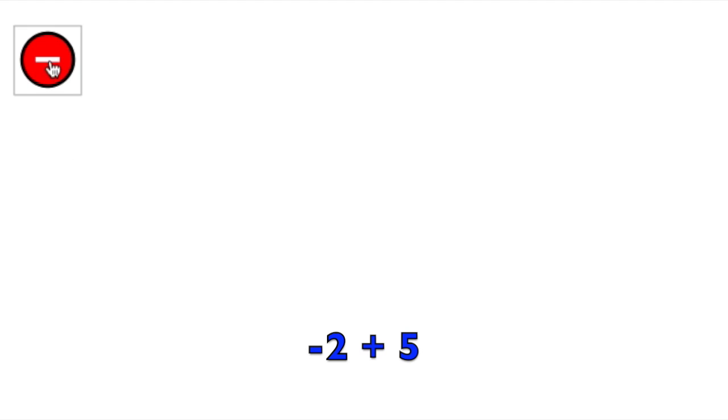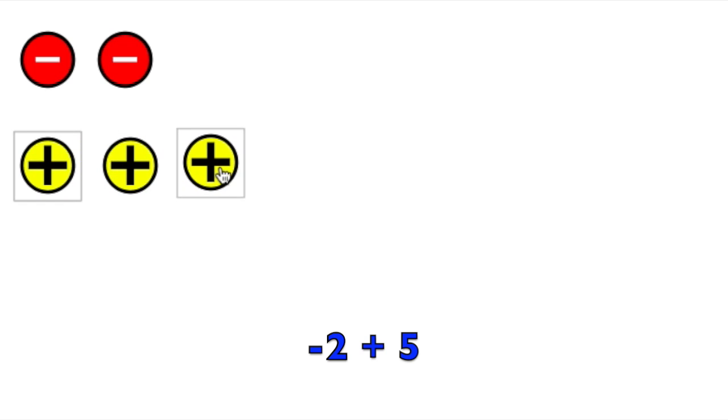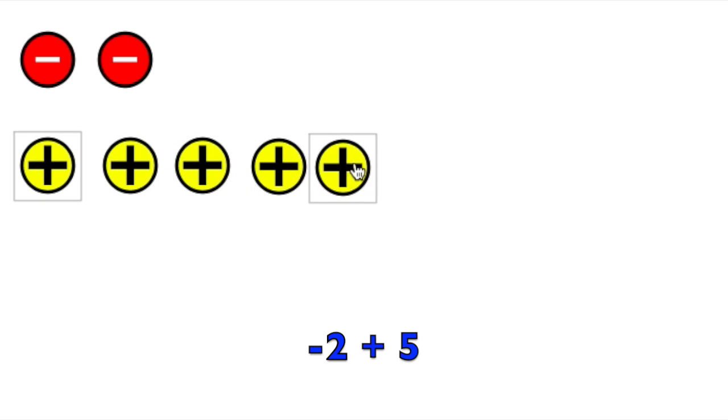I have negative 2 plus 5. So if I want to model this, I need to have 2 negative chips, and because the 5 is positive, I need 5 positive chips. Now this problem is a little bit different than the last one, because we have chips of different kinds.